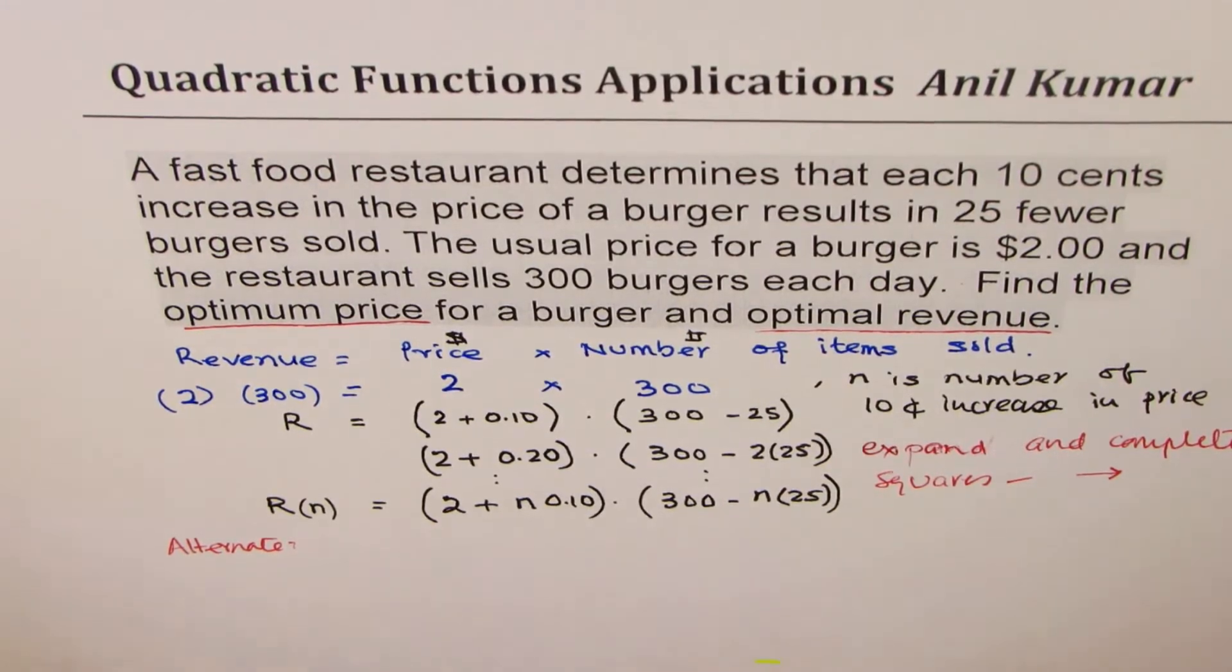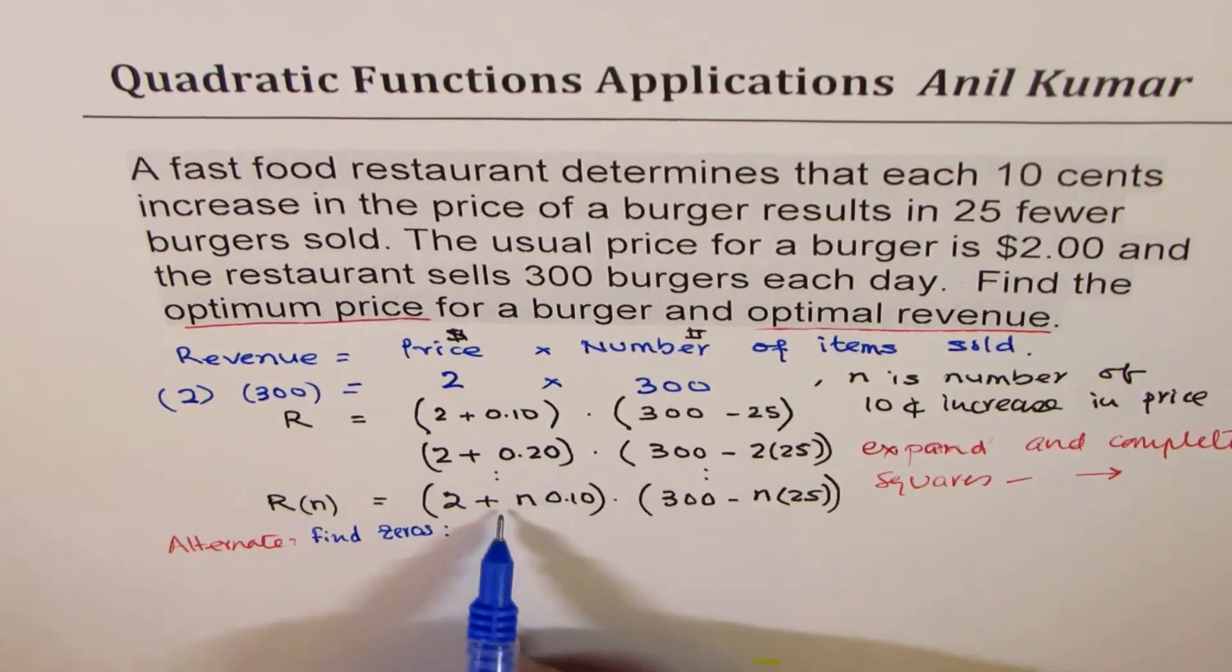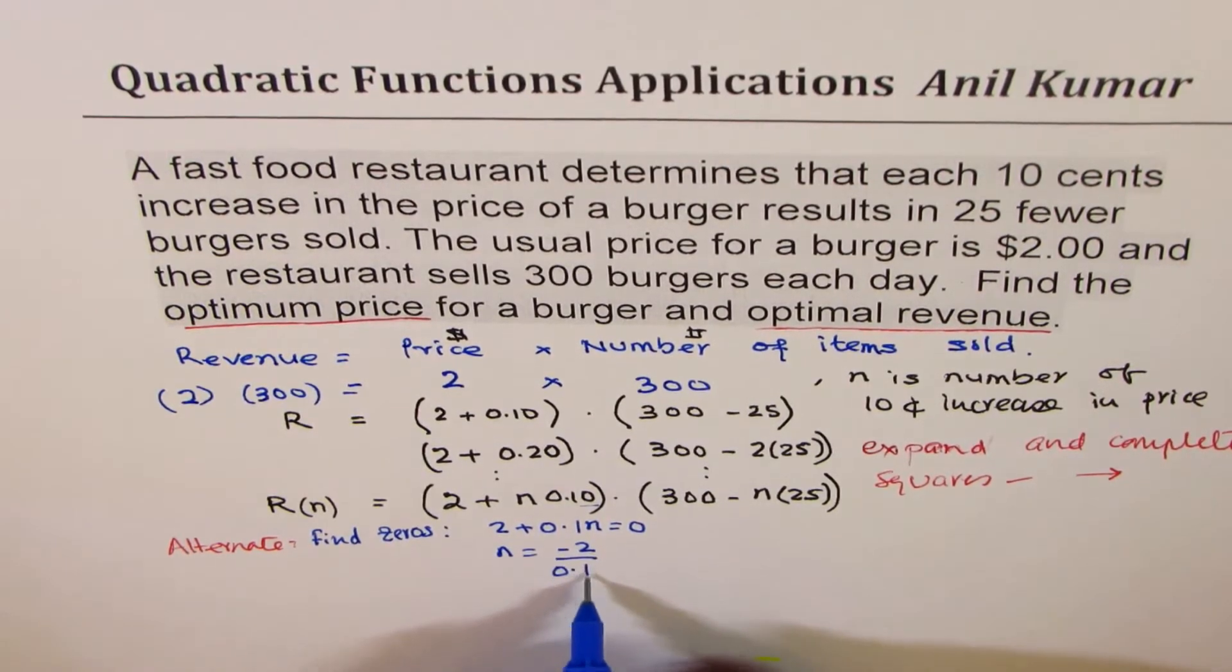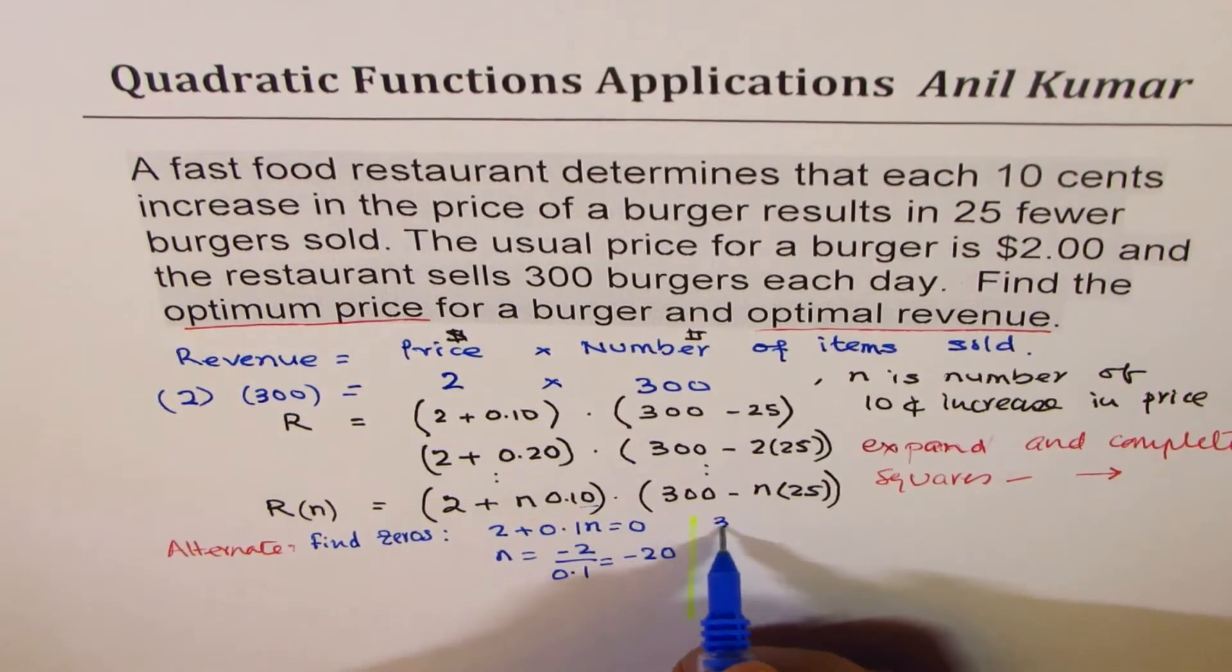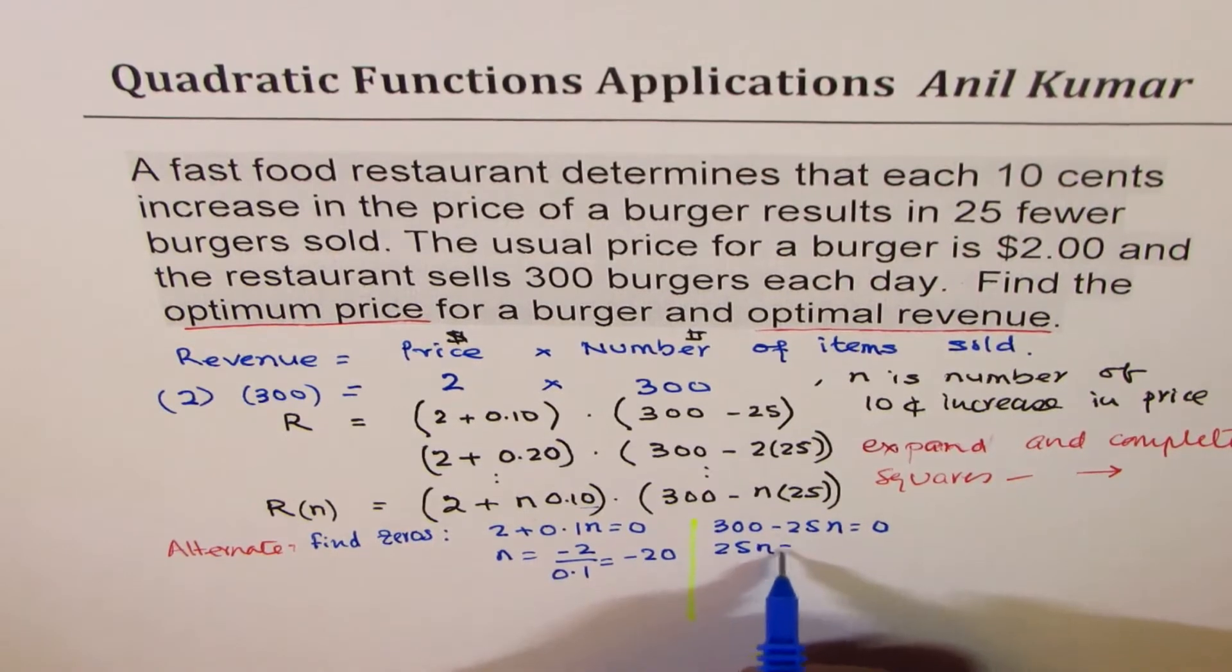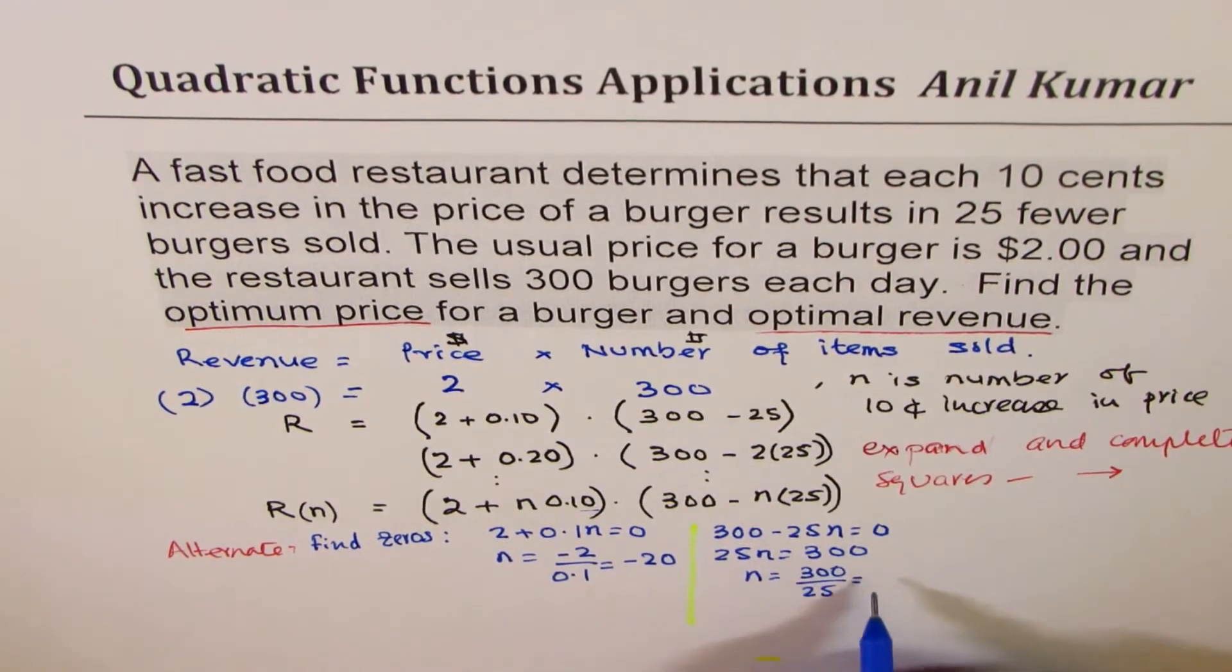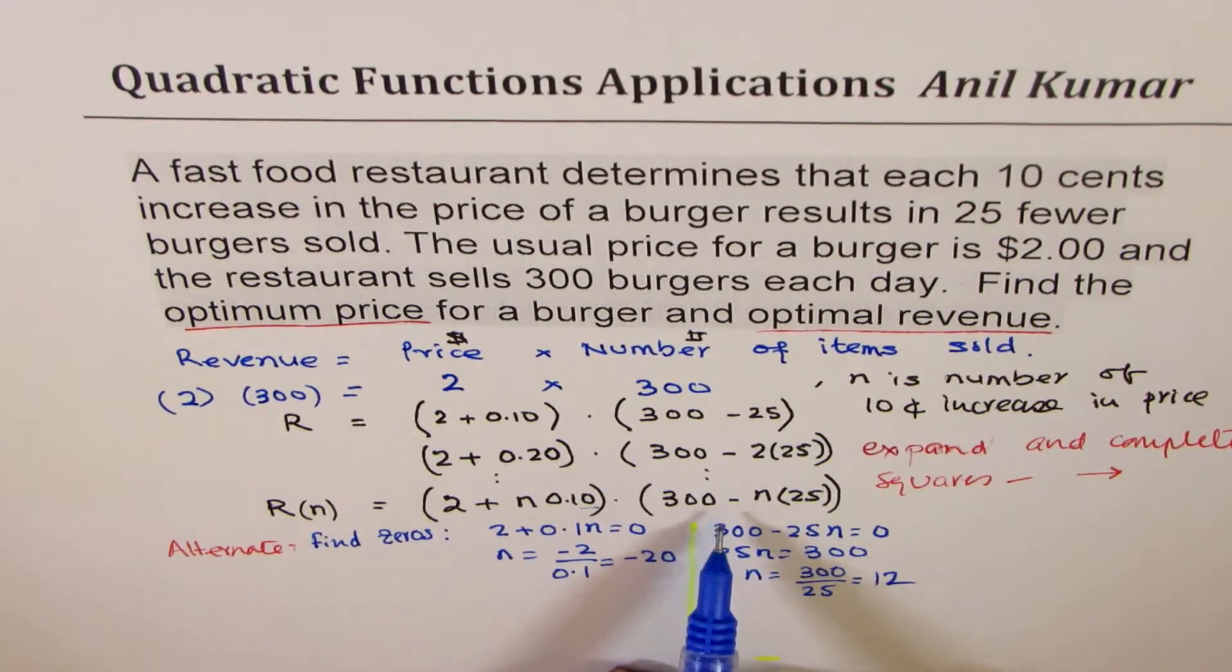Let's find zeros. So alternate method is find zeros. For the first one, 2 plus 0.1n equals 0 means n equals minus 2 divided by 0.1, which is minus 20. Now for the second one, if I equate 300 minus 25n equals 0, then 25n equals 300 or n equals 300 divided by 25, which is 12. So we get these two zeros for this function.